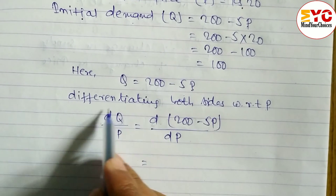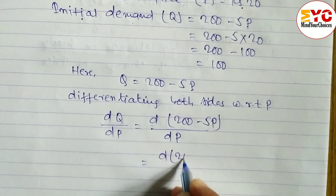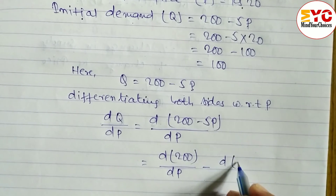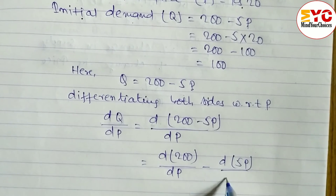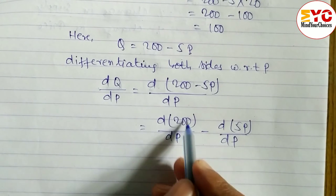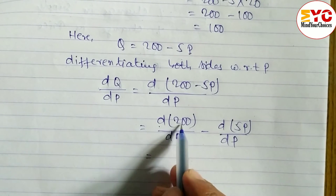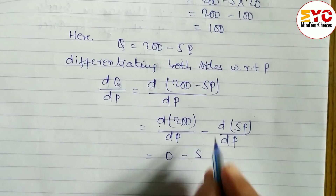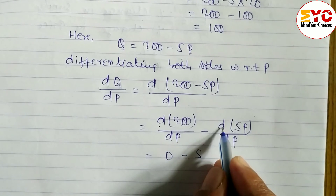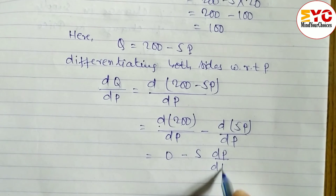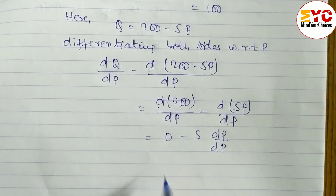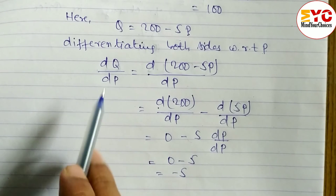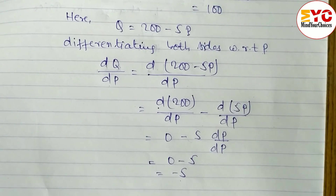Separating: d(200)/dp minus d(5p)/dp. The derivative of the constant 200 is 0. For the second term, the constant 5 comes to the front and dp/dp equals 1, so it becomes minus 5. Therefore dq/dp equals minus 5.